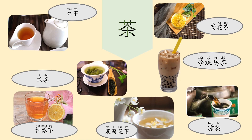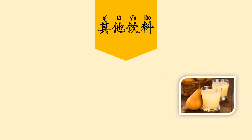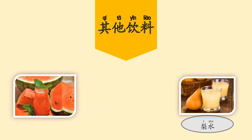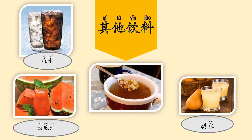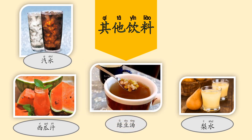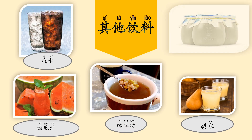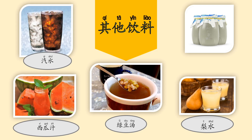Now let's look at 其他饮料 — other drinks. Pear juice is 梨水. Watermelon juice is 西瓜汁. Soft drink or soda is 气水. Green bean drink is 绿豆汤. And the last one is Old Beijing style yogurt — 老北京酸奶.